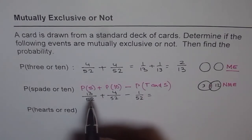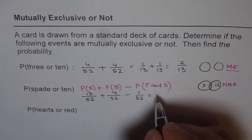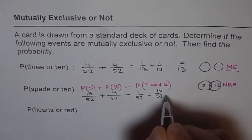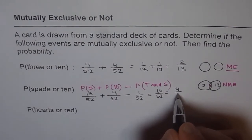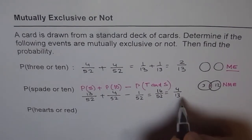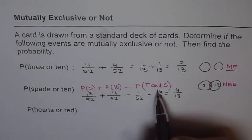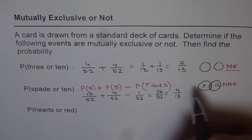So we get 13 plus 4 minus 1, which equals 16 over 52. Dividing both by 4 gives us 4 over 13 as our answer. This is not a mutually exclusive case since there is something common — the ten of spades.